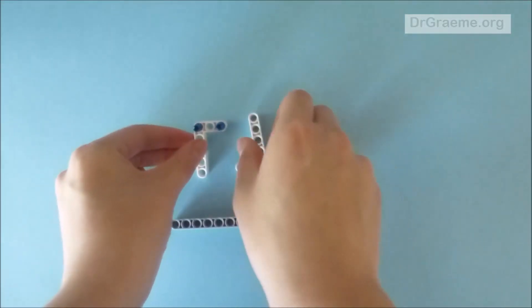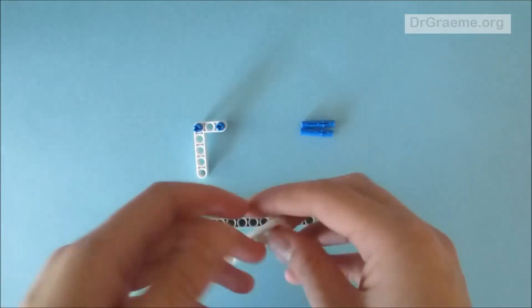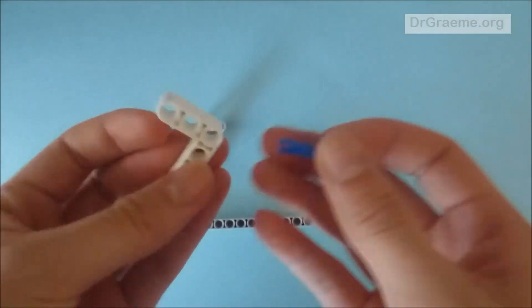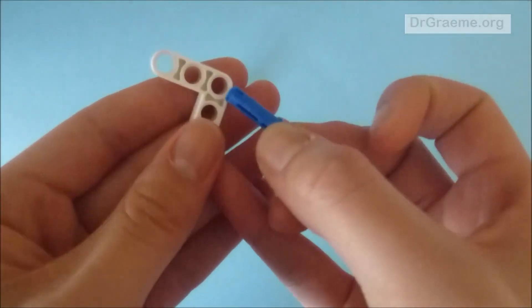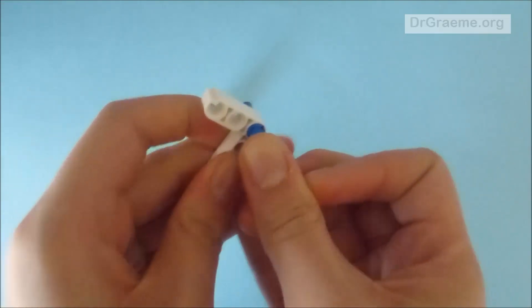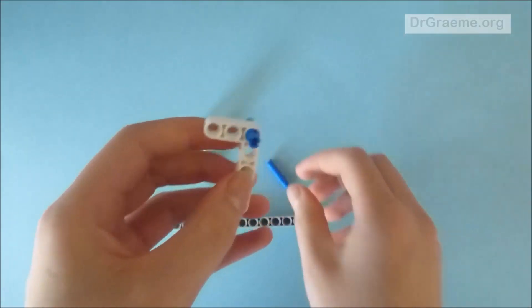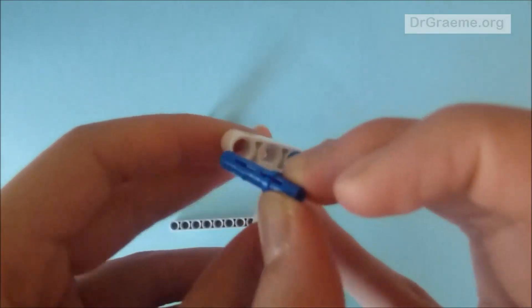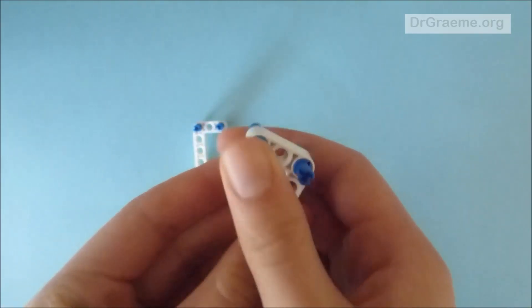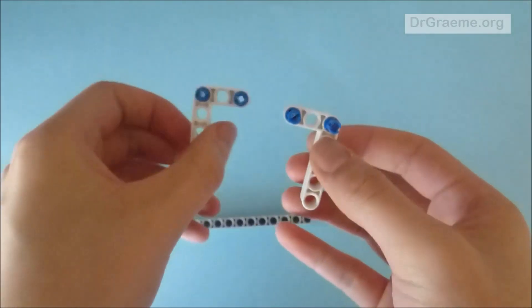Now we will do the exact same thing on the other one. So we will put the long side in the corner hole, and then the other one in the end. So they should look like this.